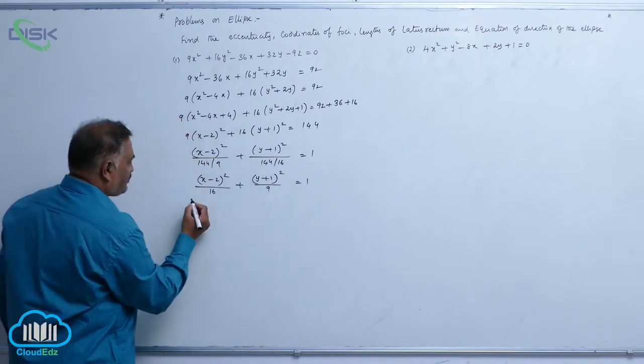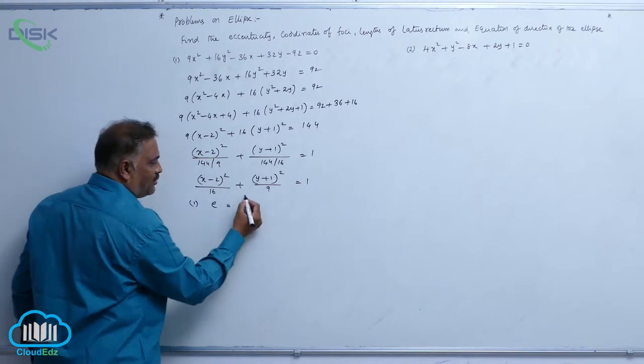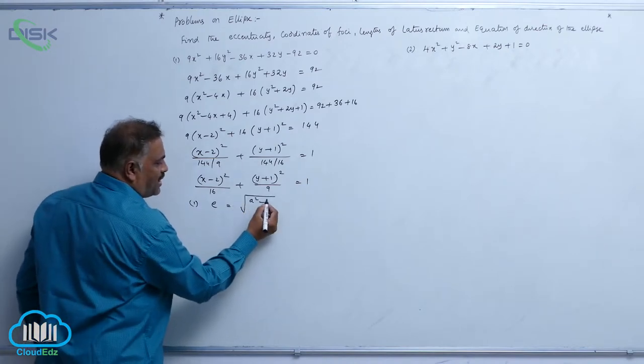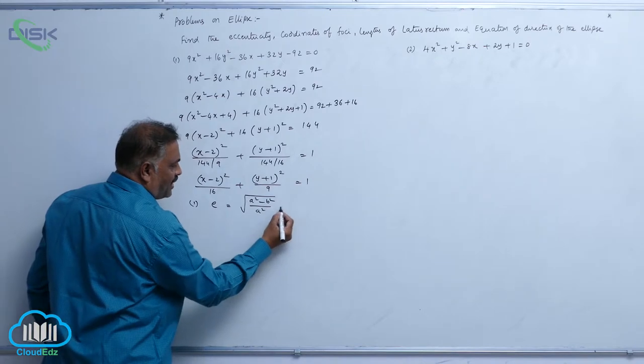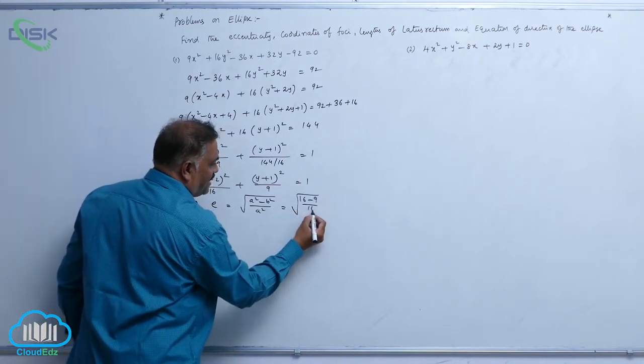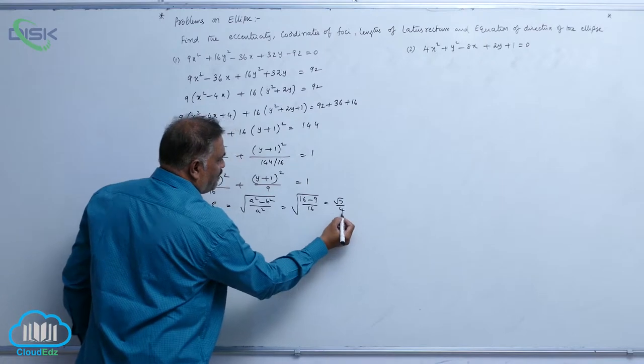First, we require eccentricity equal to root of a square minus b square by a square, root of 16 minus 9 by 16, root 7 by 4.